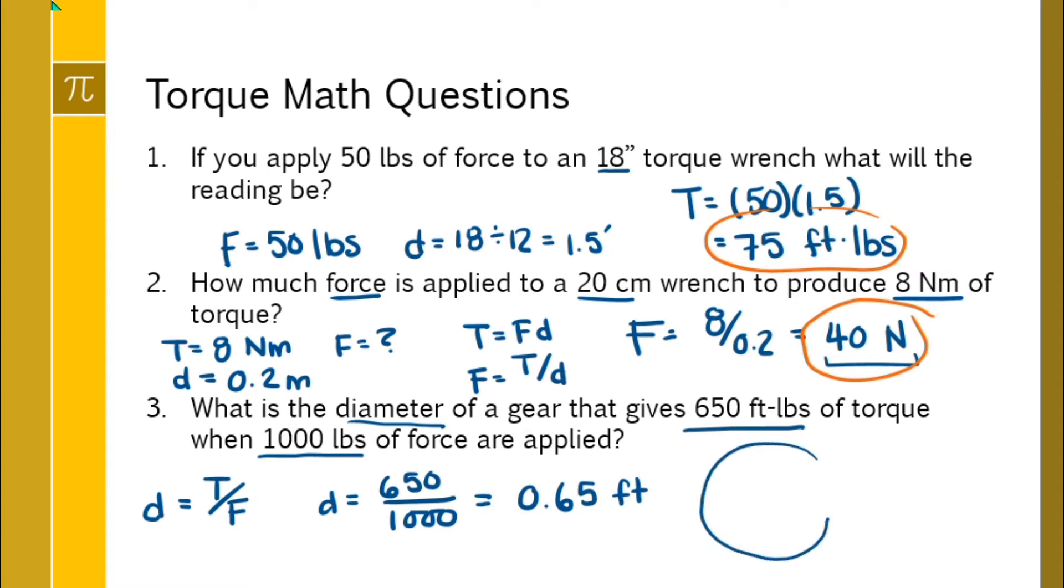So that 0.65 goes from the center to the outside of the gear where the force is applied. So in order to get the diameter, which is what the question asked us for, we have to take that number, that distance,